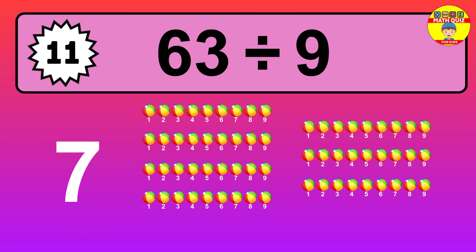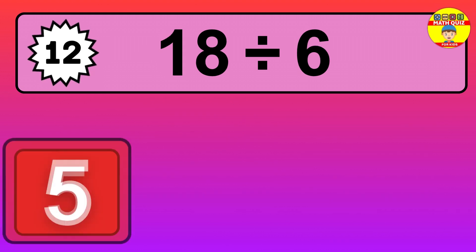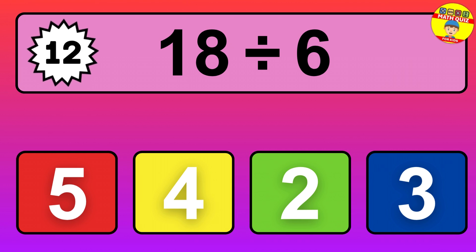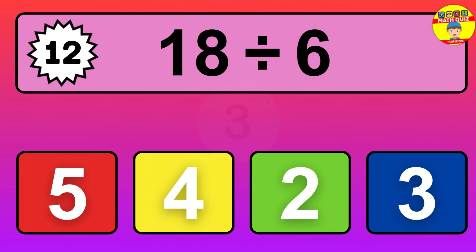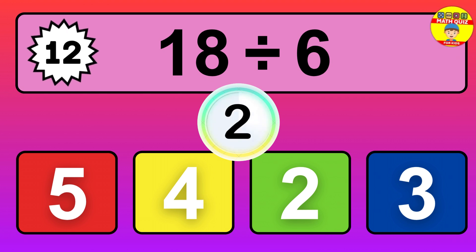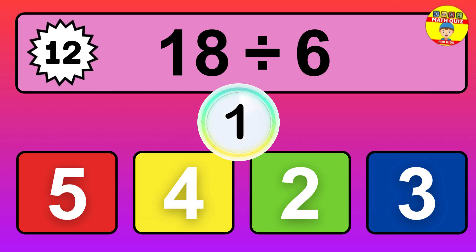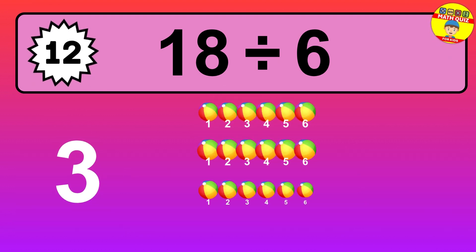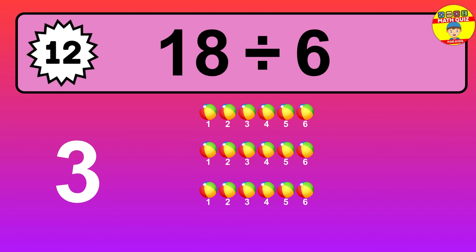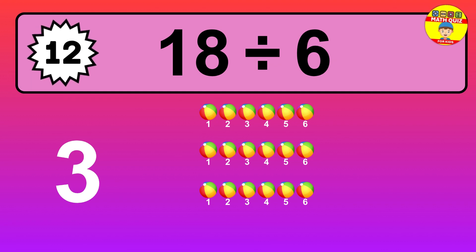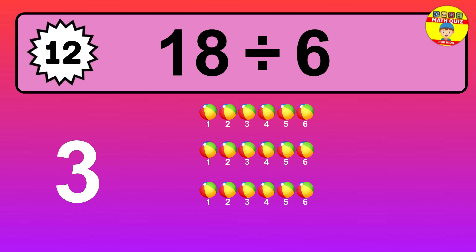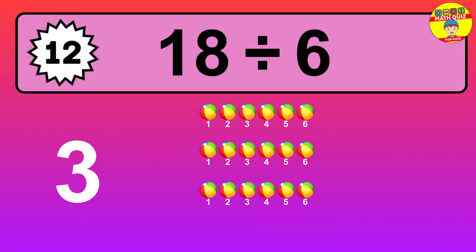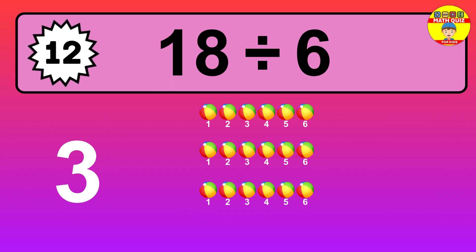Thus, the result is: 63 divided by 9 equals 7. 18 divided by 6 is... time to think. Let's go to the solution. Divide the number 18 by 6. Each group contains 6 units, so dividing 18 by 6 results in 3 equal groups. Thus, the result is: 18 divided by 6 equals 3.